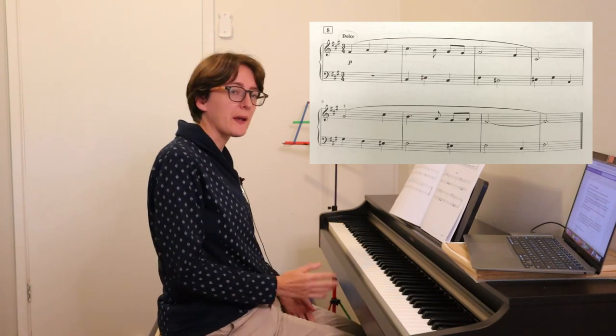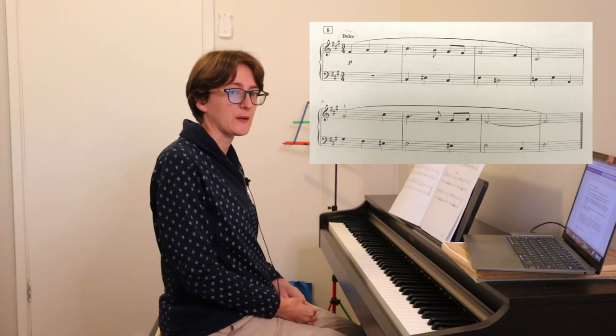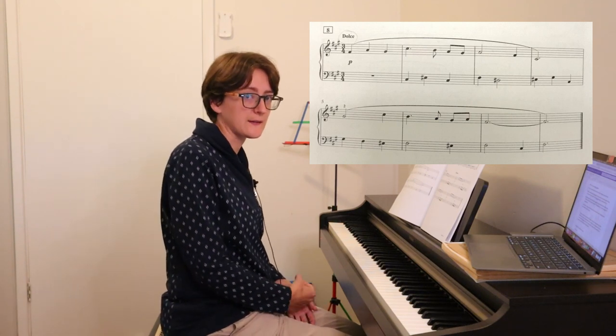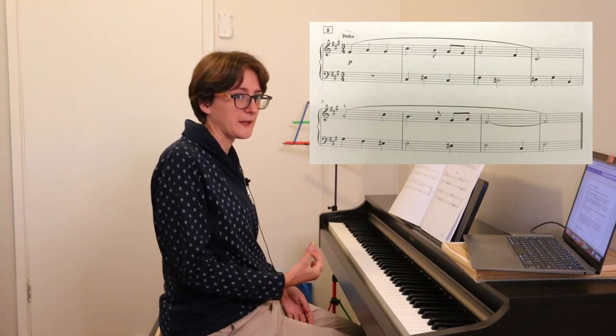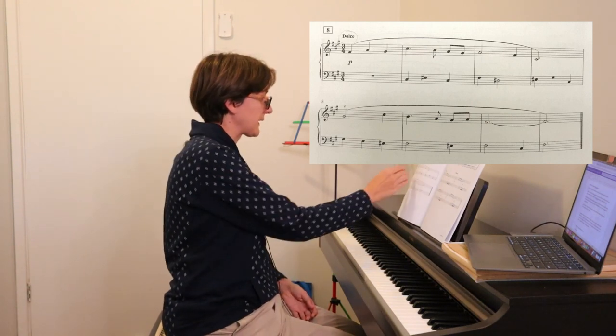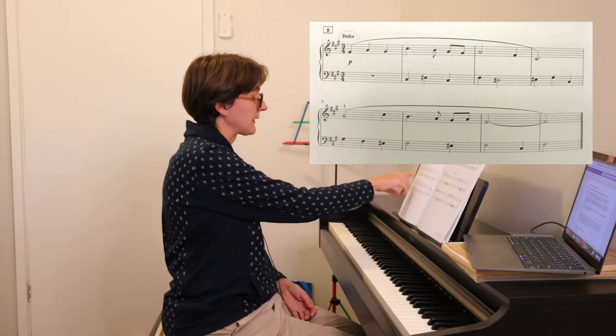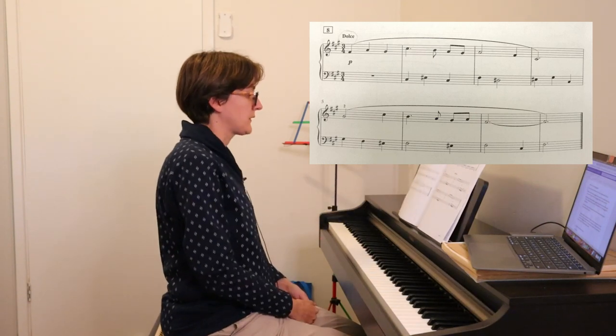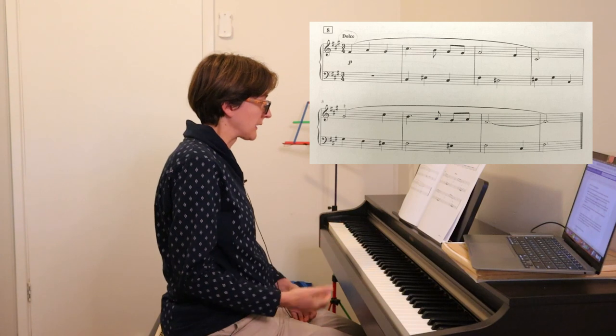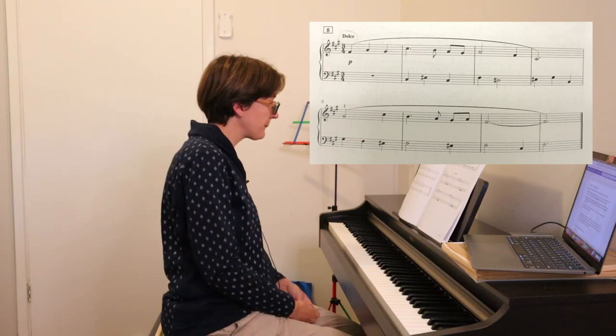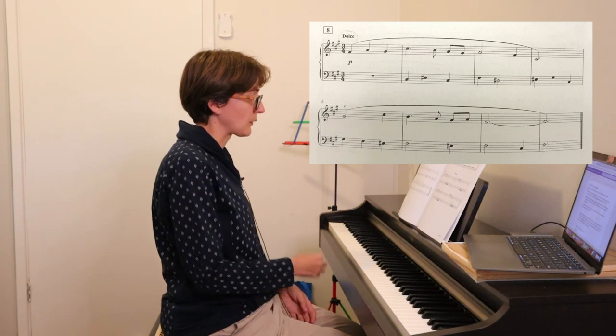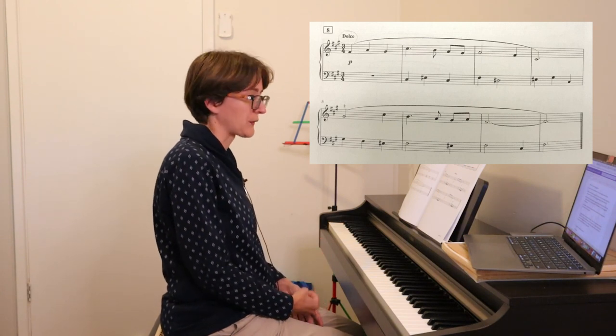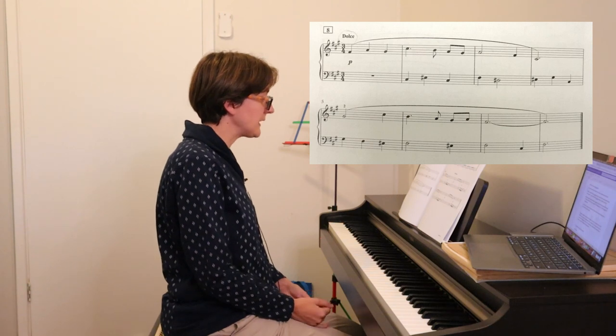So hopefully it will be relevant to most people. The first one is number eight on page 22. Now as you may already know you only have 30 seconds to look at the excerpt. So this is what I would do if I only had 30 seconds. Immediately I notice we are in three four. So that means you'll be counting three beats in each bar. It has three sharps. Now you should know immediately what those are. Those are F, C and G.